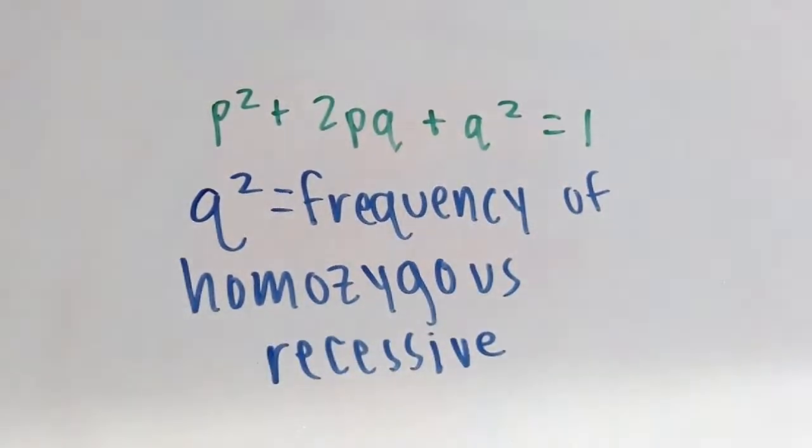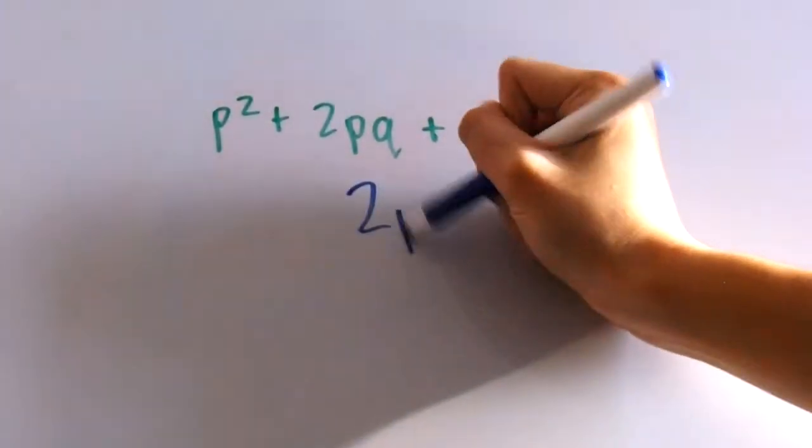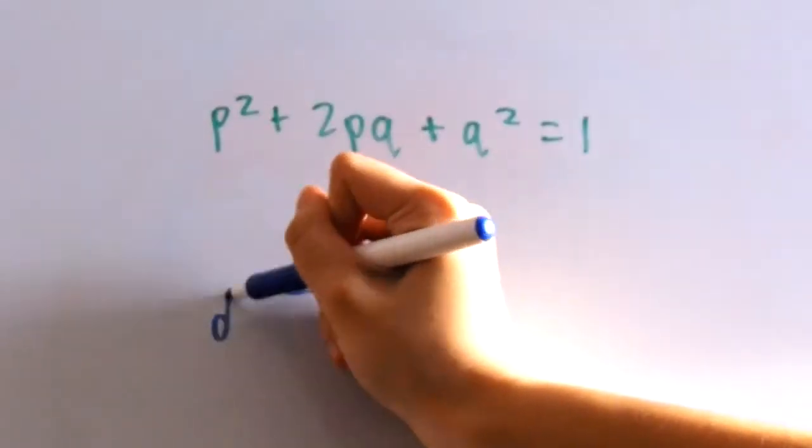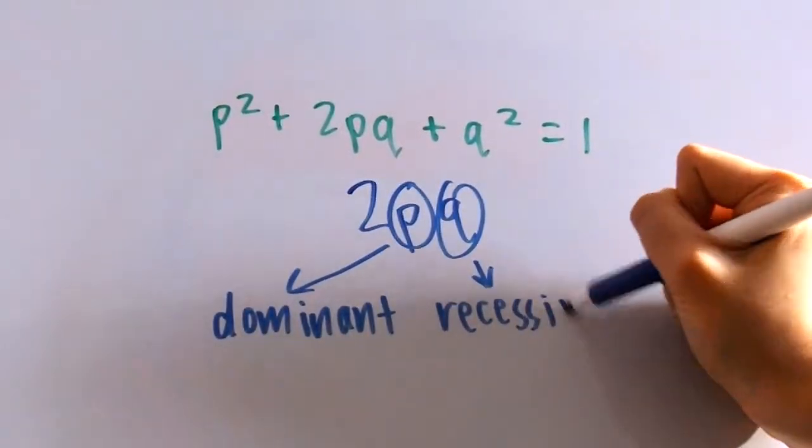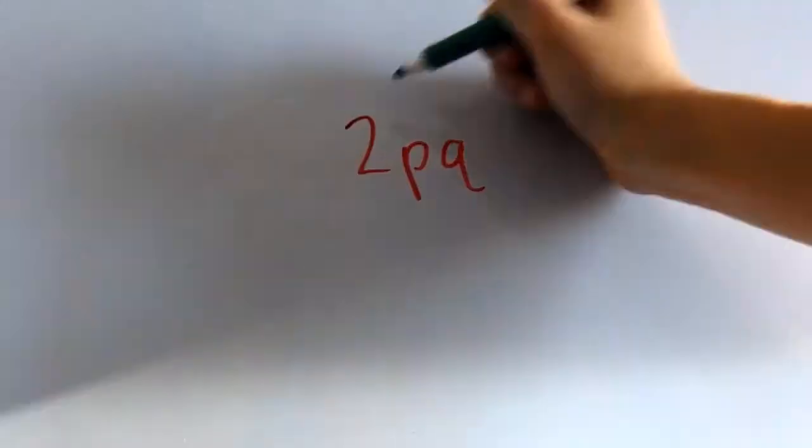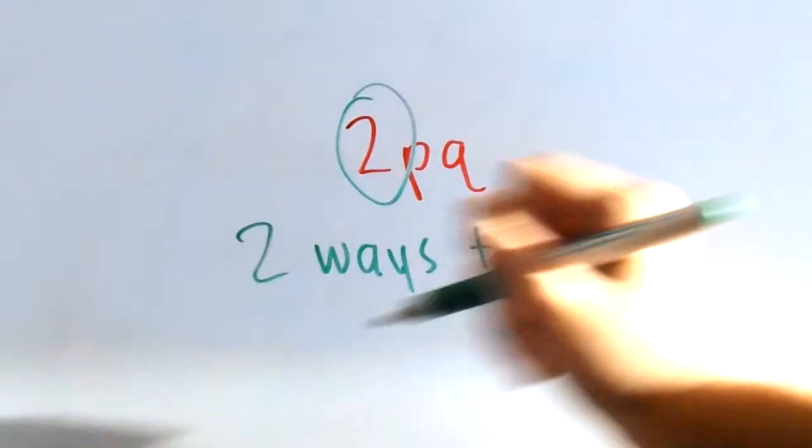Now let's take a look at the middle term, 2pq. It makes sense because there's a p here and a q here, meaning that they have one dominant allele and one recessive allele. But where does the two come from? Actually, this means that there are two ways to get heterozygous offspring.